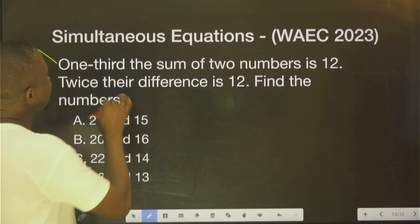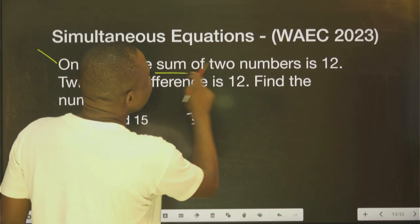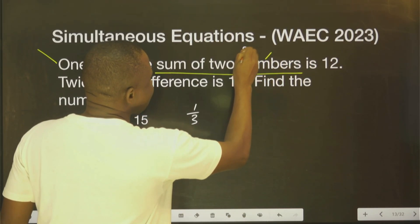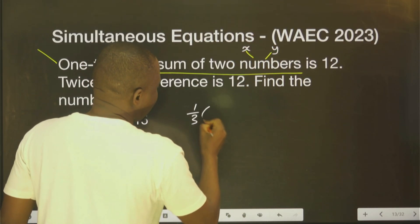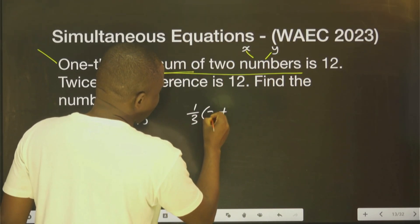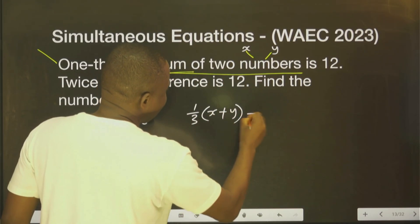This first line. One-third of the sum of the numbers. We don't know these numbers. Let's call them S and Y. The sum of S and Y, sum, that is plus. S and Y is 12.